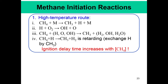The first important question is how CH4 essentially breaks down. The most important step is initiation, and there are two initiation routes. The high-temperature route is: CH4 plus M goes to CH3 plus H plus M. The formation of this H radical is very important, because as soon as H is formed, the key chain branching step — H plus O2 — can immediately happen and form OH and O. CH4 can then react with H, OH, and O to form CH3.